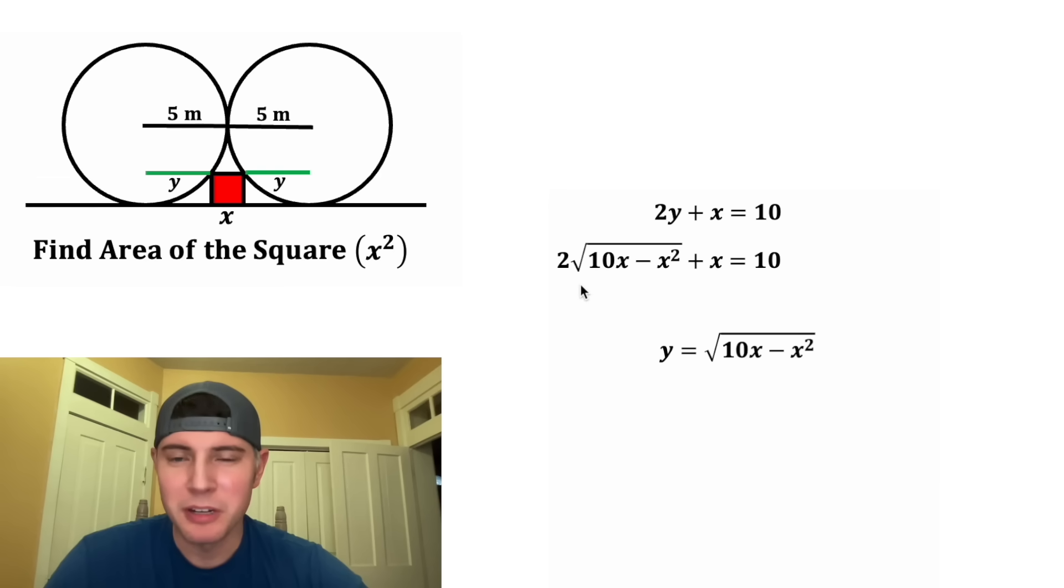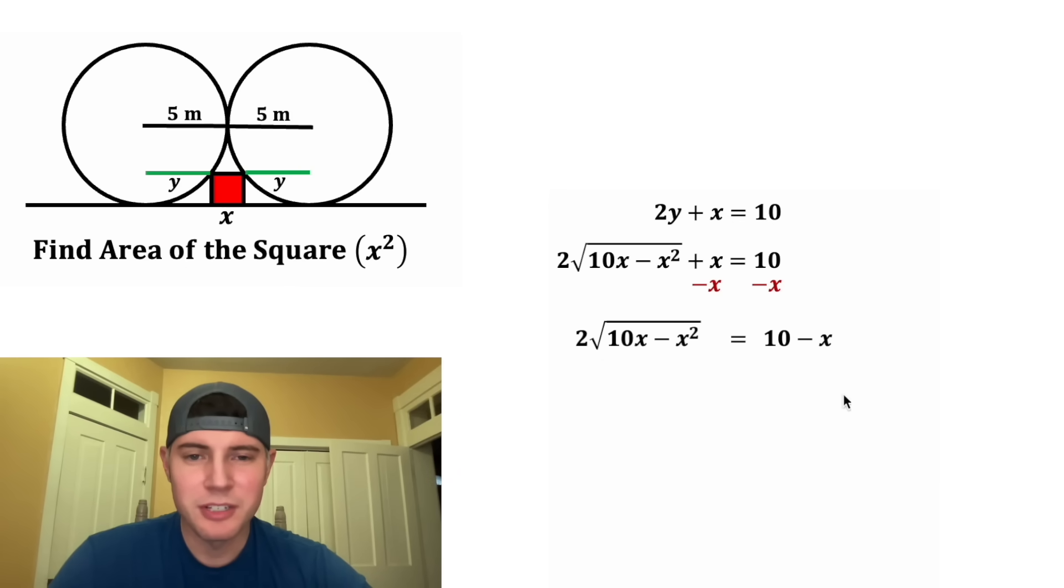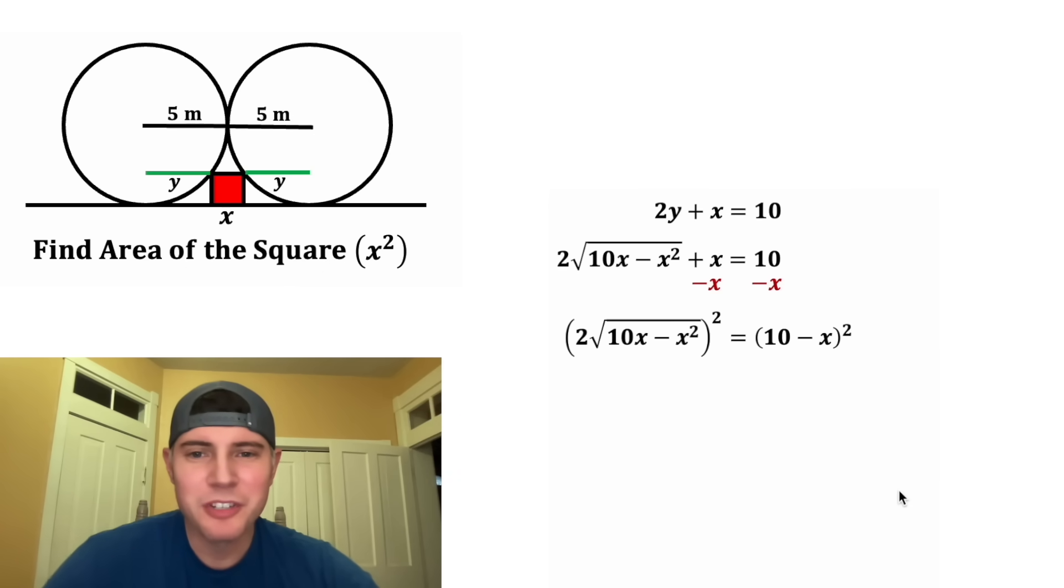So in the place of this Y, we can plug in square root of 10X minus X squared. And now we just got to solve for X. We can subtract X from both sides. That'll give us two times the square root of 10X minus X squared is equal to 10 minus X. And then we can square both sides of the equation.